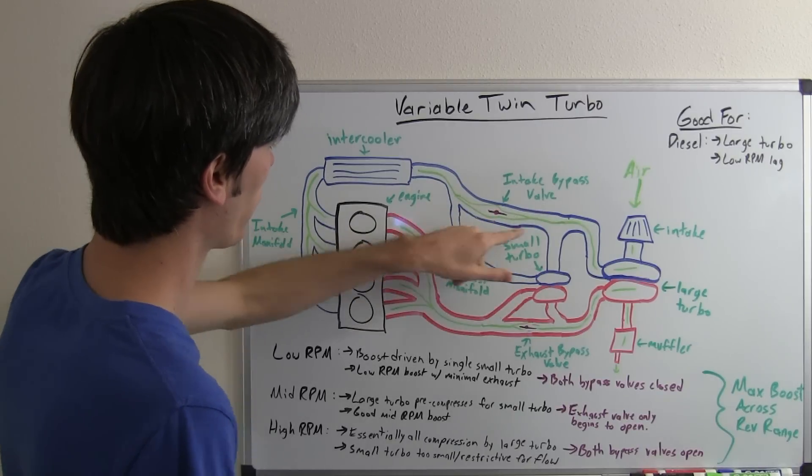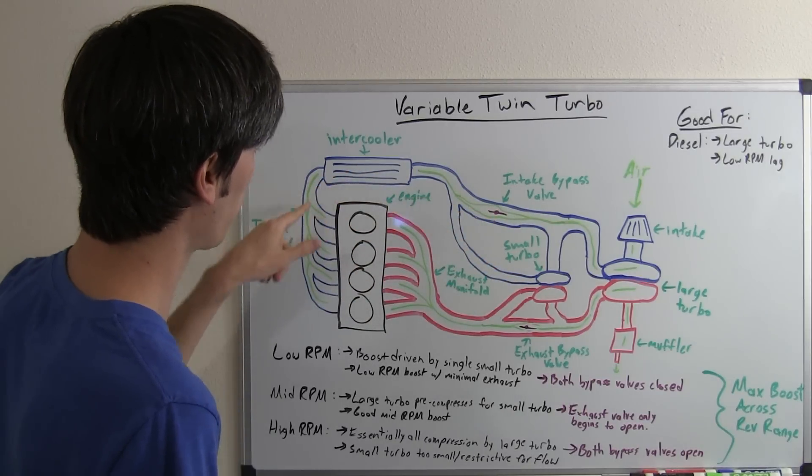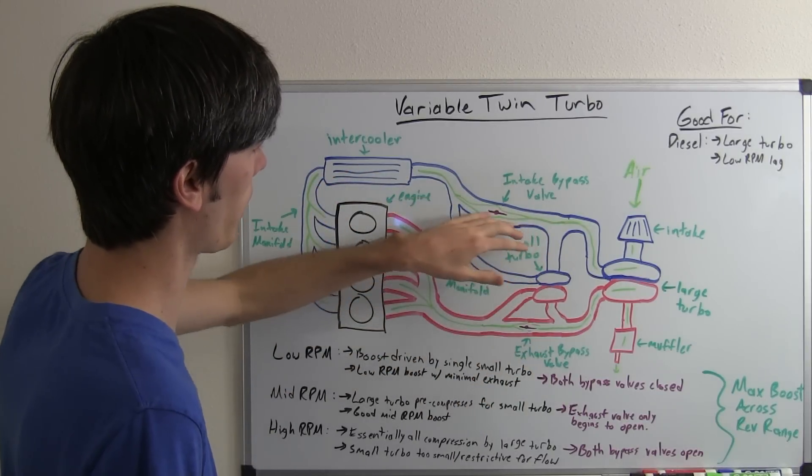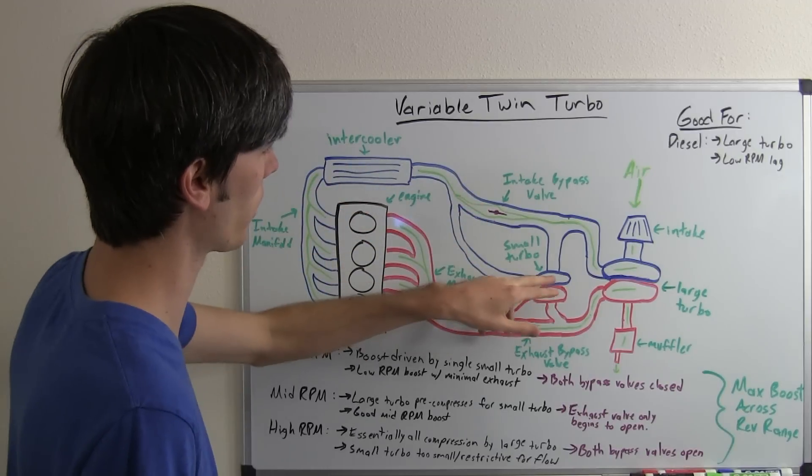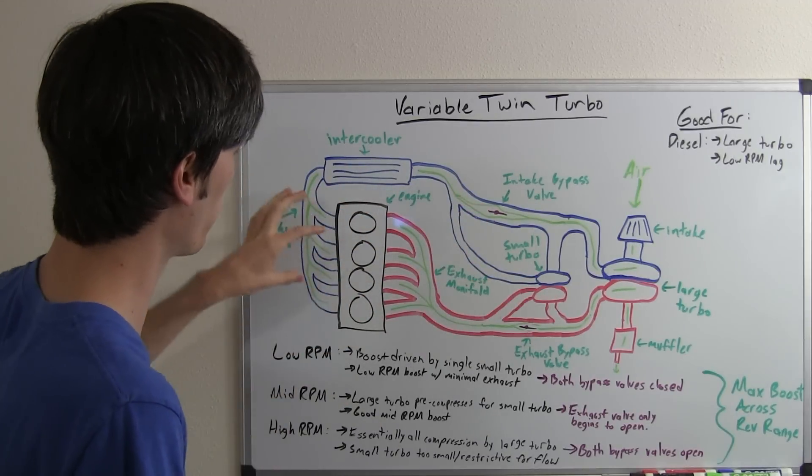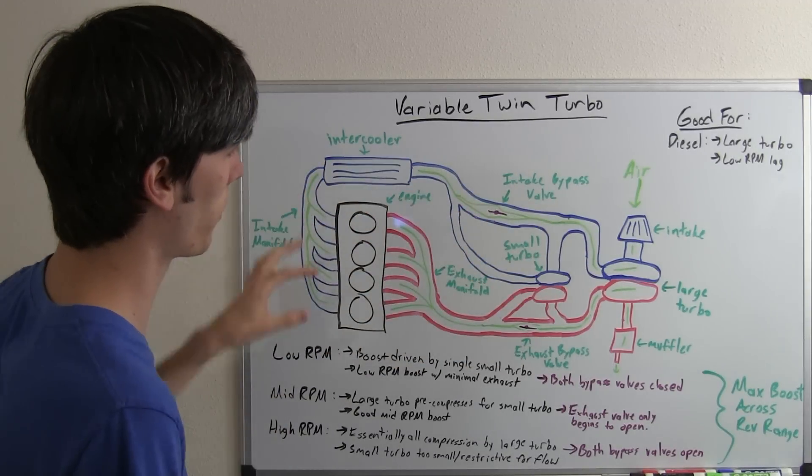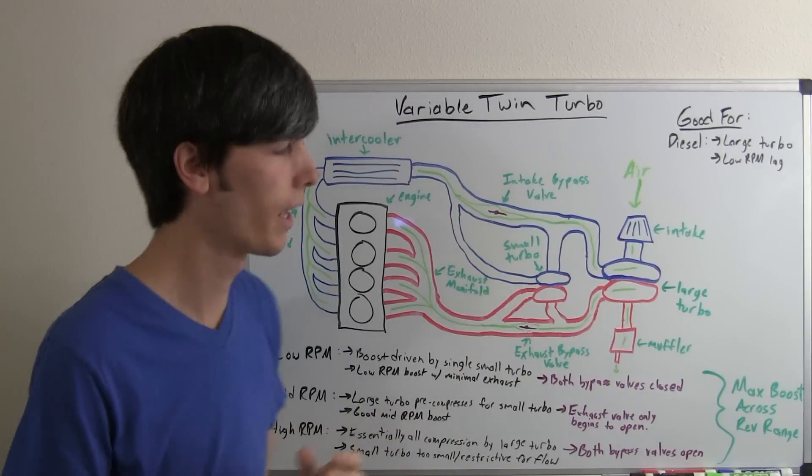Instead of going through the small turbo it can just go directly past it and into your intercooler, so the air is just going to take the easiest path there. The process is just going to repeat itself so you're going to have a lot of boost at a higher RPM.